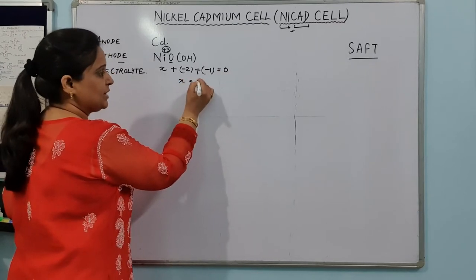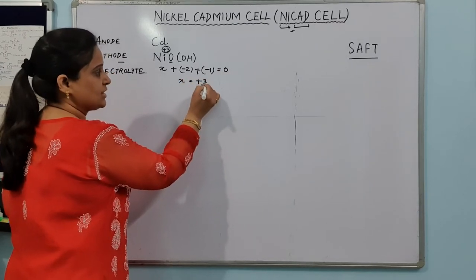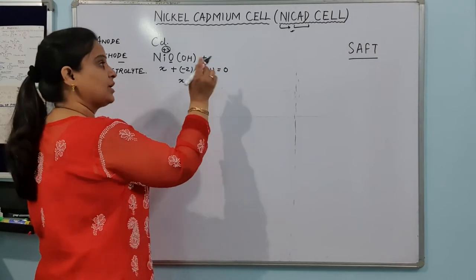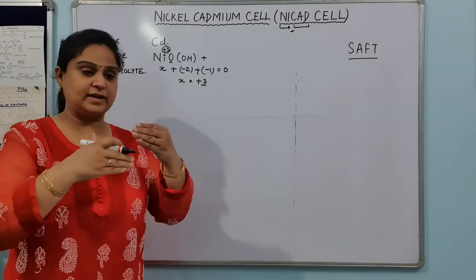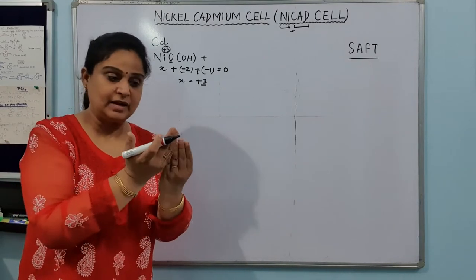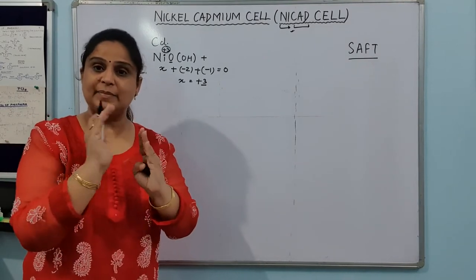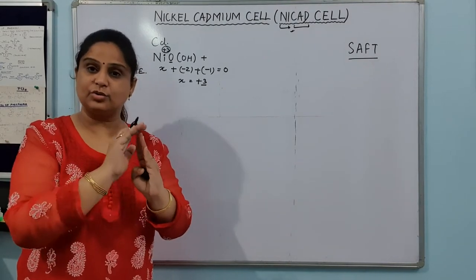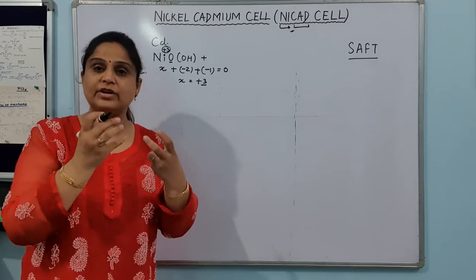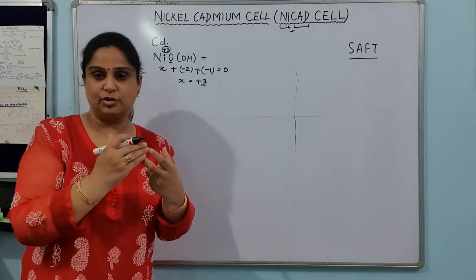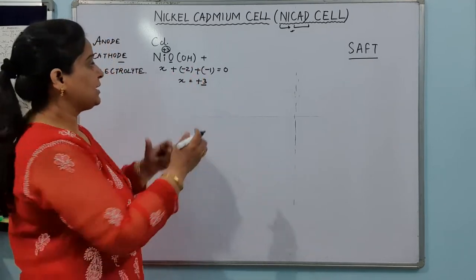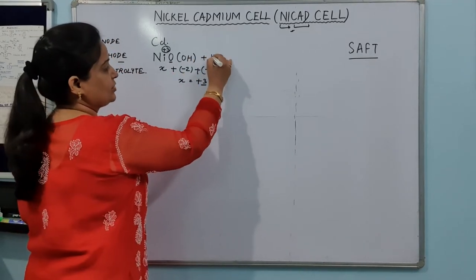So X equals plus 3 for Nickel. Nickel Oxide Hydroxide in the presence of water, which is already available in the cell. This cell has a jelly roll structure, which means anode, then separator, then cathode. Some rolls have been separated with water-soaked layers, so water is present in those layers along with the Nickel Oxide Hydroxide.